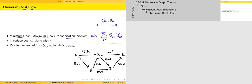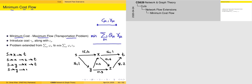We enumerate all paths from S to T. Starting from shorter ones: S to X to T; S to X to Z to T; S to Y to X to T; S to Y to X to Z to T; and S to Y to Z to T.